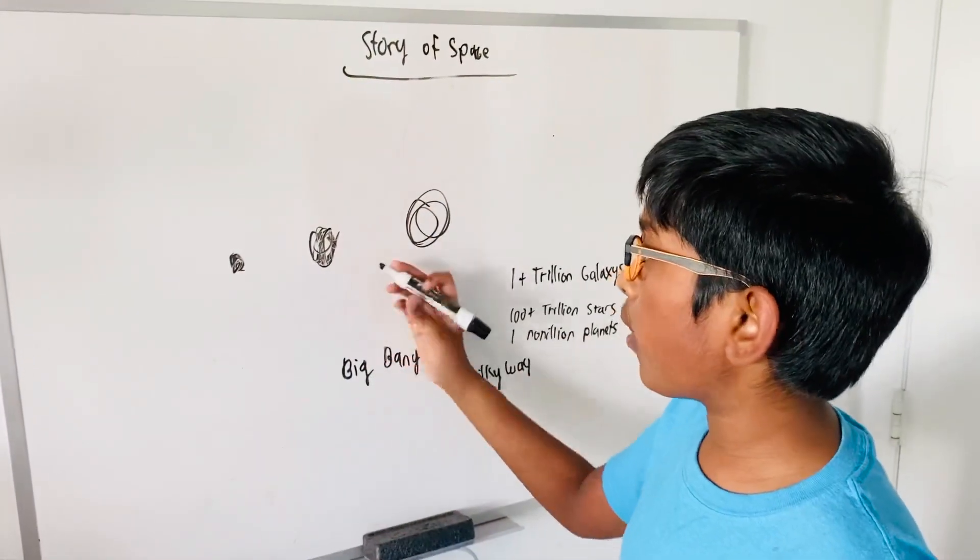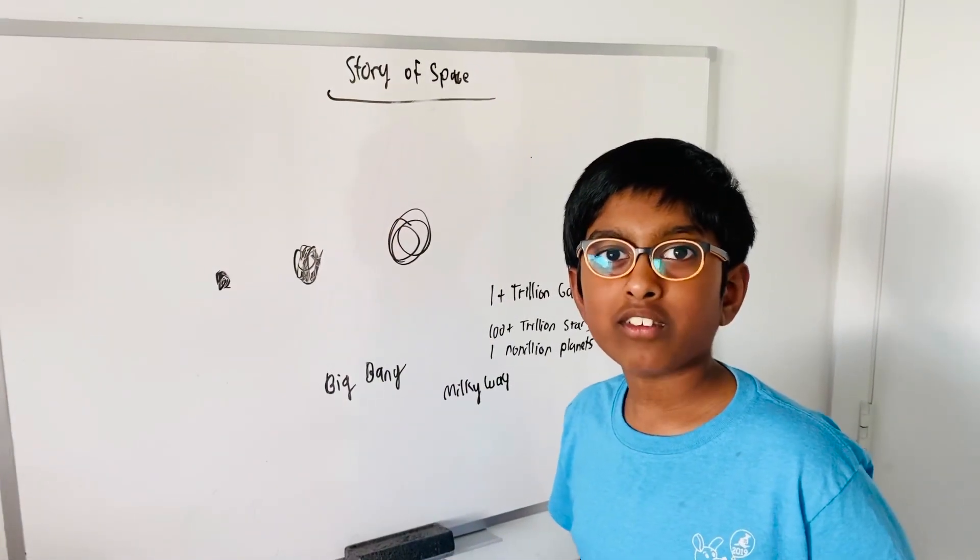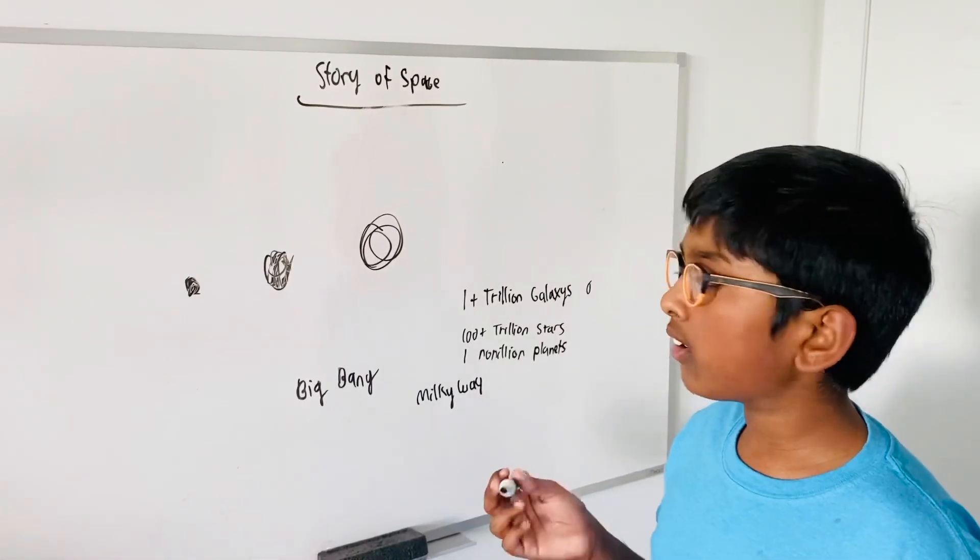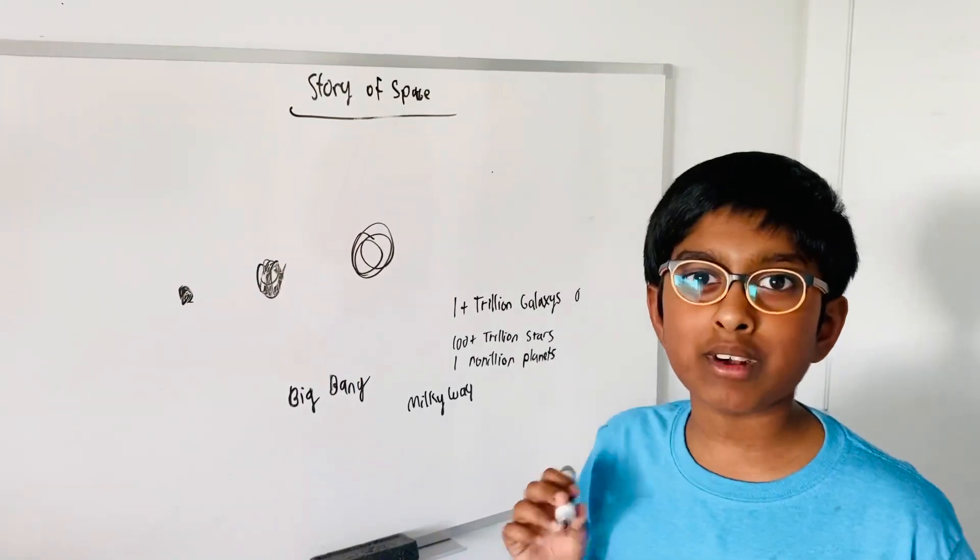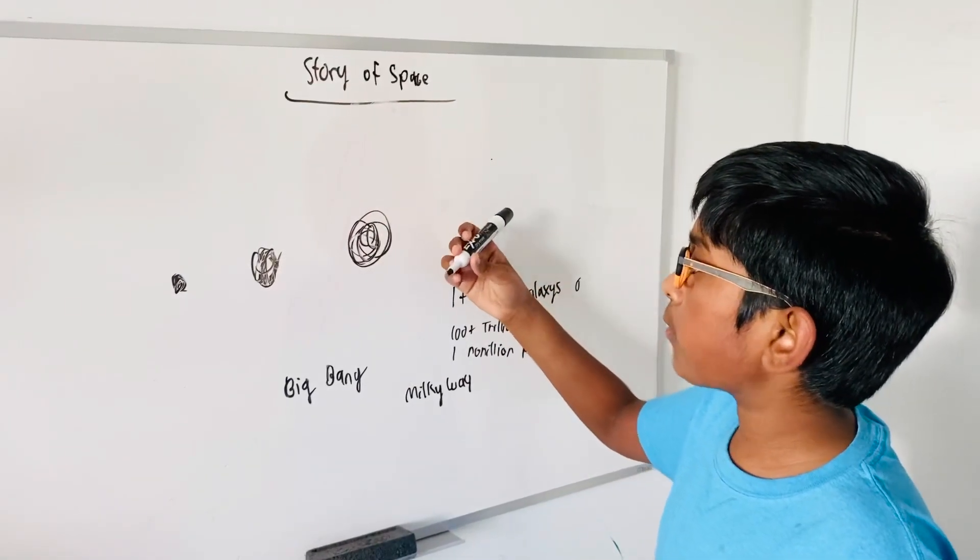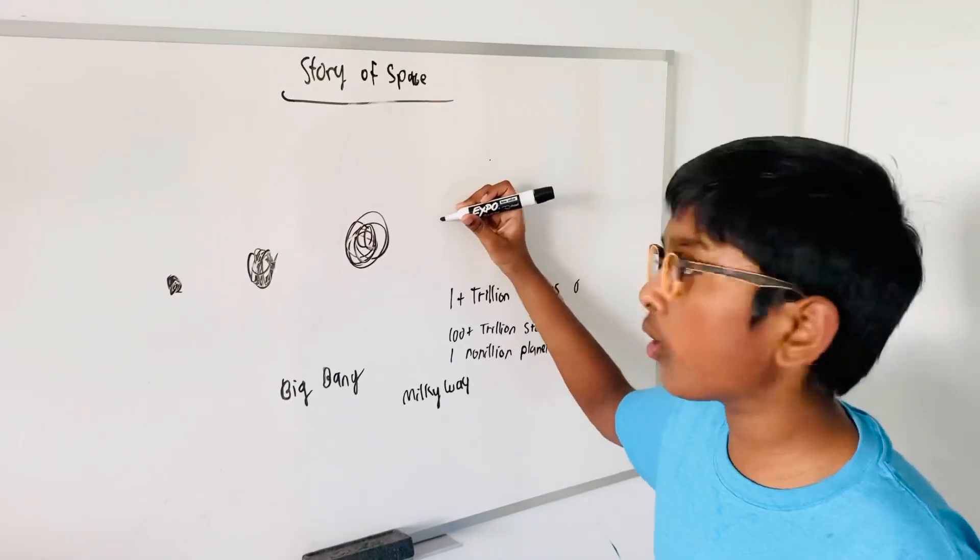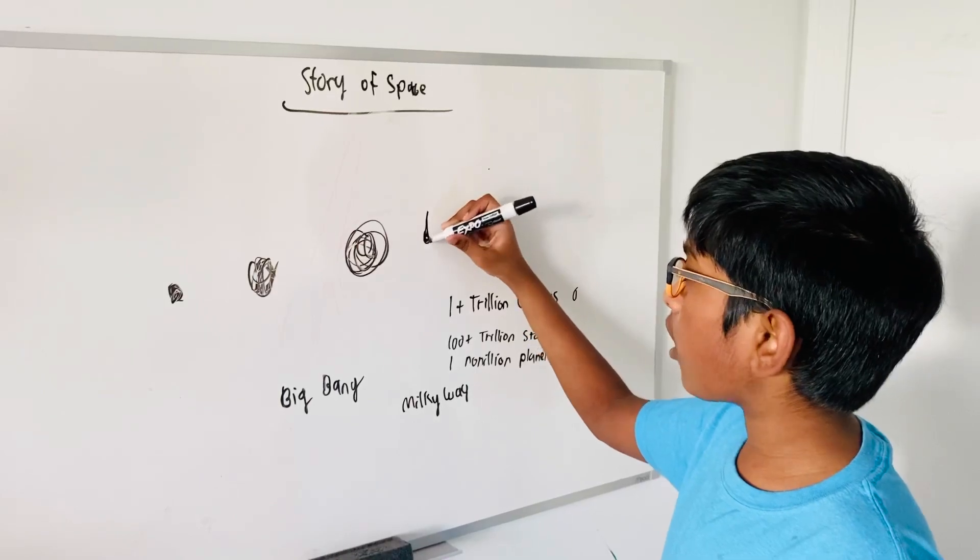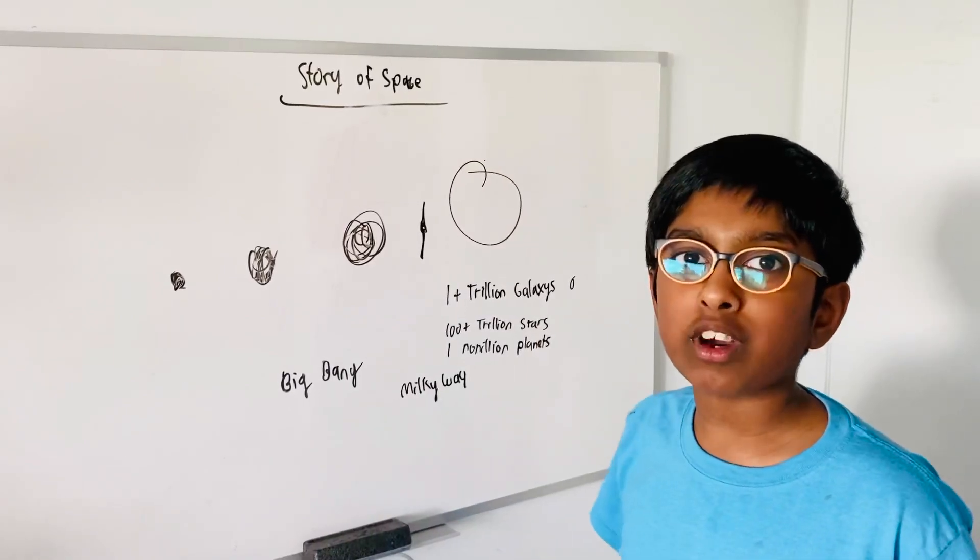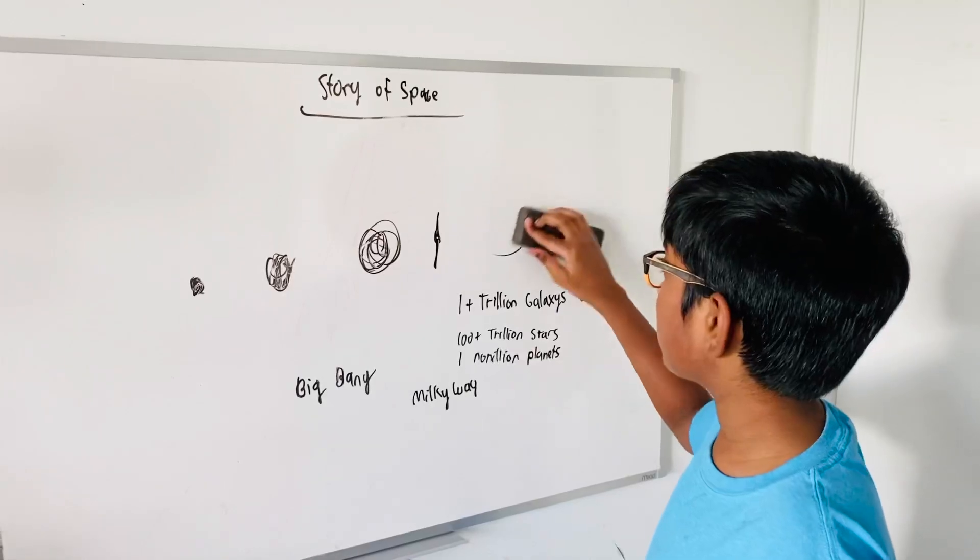They explode into giant supernovas and form nothing. These giant explosions can be so bright that they can be seen from millions of light years away. Big stars can either form a neutron star, which is powered by neutrons, or they can become a black hole, which we talked about later. If you don't know what black holes are, check my other video.